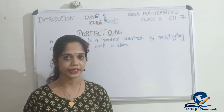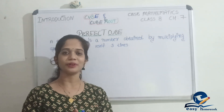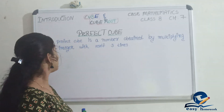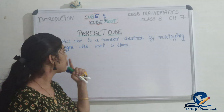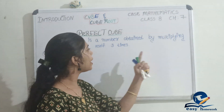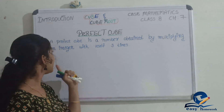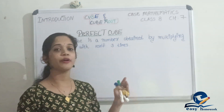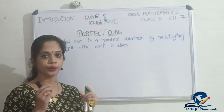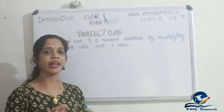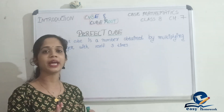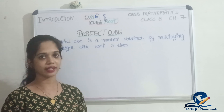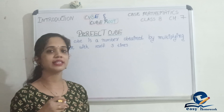We have learned the perfect cube. A perfect cube is a number obtained by multiplying an integer with itself three times. That's why we have learned the perfect cube.